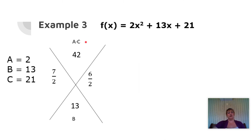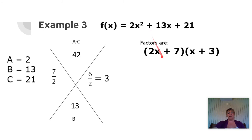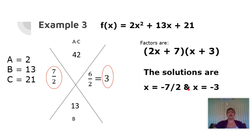After reducing: 7 divided by 2 stays as 7 halves, and 6 divided by 2 reduces to 3. When we have a fraction on these side pieces, remember the phrase 'bottoms up' — we take the bottom first. So this 2 becomes 2x, giving us 2x plus 7. The other factor has just a 1 underneath, so we get x plus 3. My factors are 2x plus 7 and x plus 3. For solutions, I look at the side pieces on the x puzzle and take the opposites: the opposite of 7 halves and the opposite of 3 gives me x equals negative 7 halves and x equals negative 3.